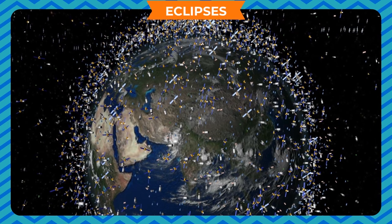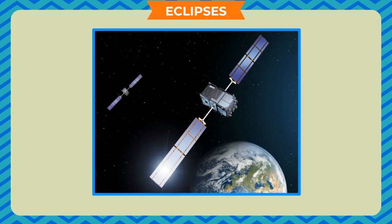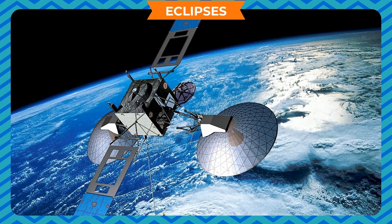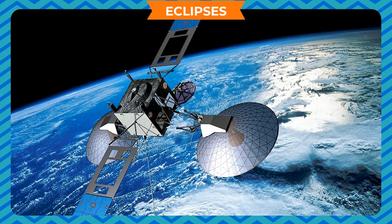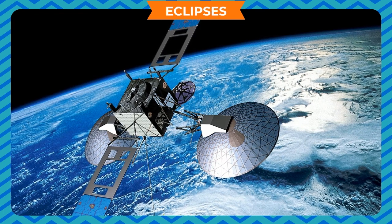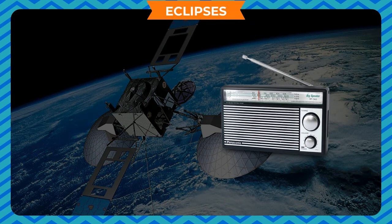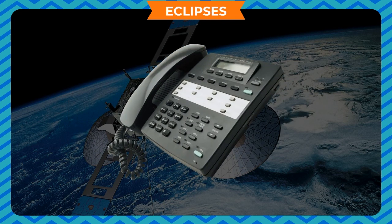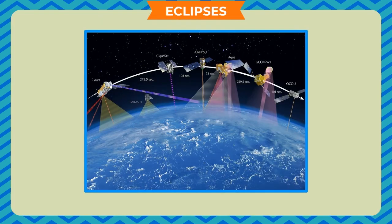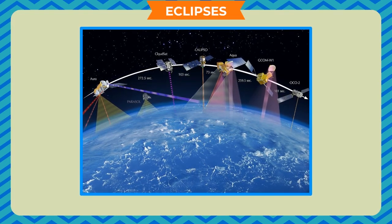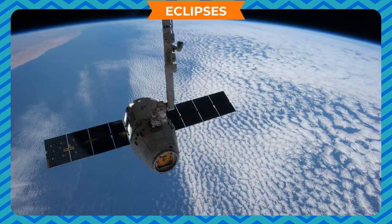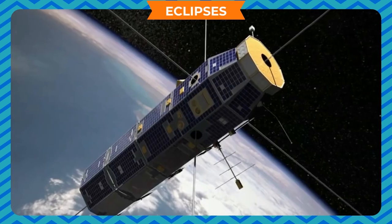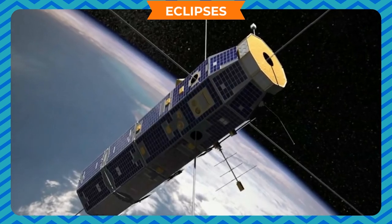Satellites revolve around the earth and can see large areas at one time. Hundreds of satellites revolve around the earth for many purposes such as navigation satellites and communication satellites. Communication satellites are used to relay radio and television programs, and telephone signals are also sent through them. Some satellites called spy satellites are communication satellites used for military applications. Satellites also give us valuable information about the atmosphere.